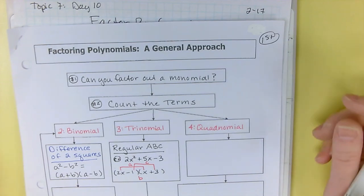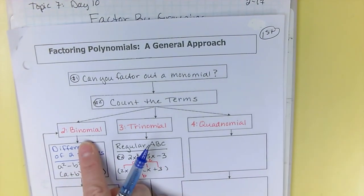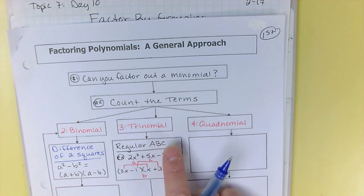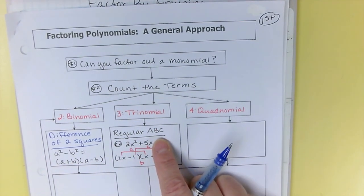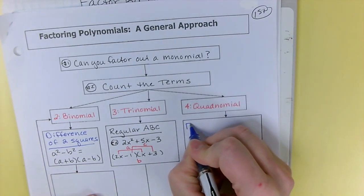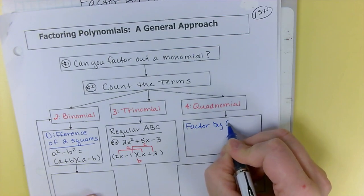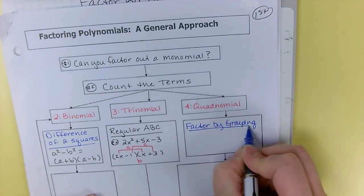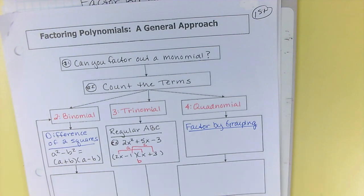There's three types of situations that we're learning to factor. Binomials, which is a difference of two squares. Trinomials, which is regular ABC factoring. And a quadnomial, which has four pieces. And this is where factor by grouping fits into our algorithm. It is how you factor something with four terms.